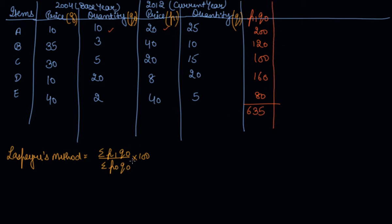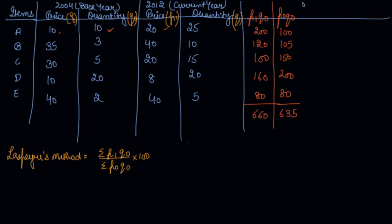Now we find P0 into Q0. This is the P0 and this is Q0, the price and quantity of the base year. The values are 100, 105, 150, 200, and 80, giving a sum of 635. Putting into the formula: 660 divided by 635 into 100 gives a Laspeyres index number of 103.94.